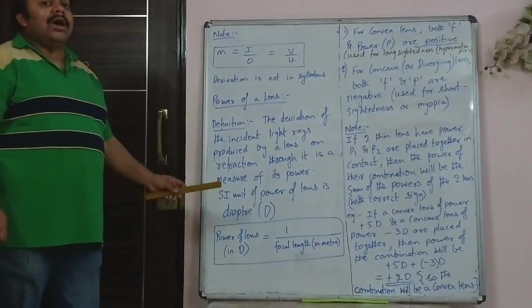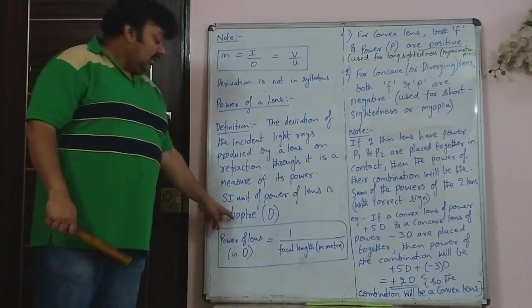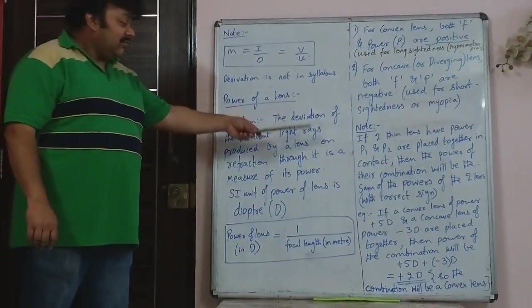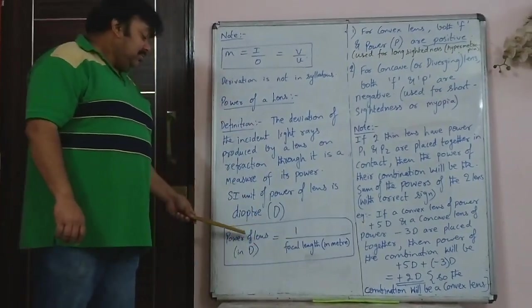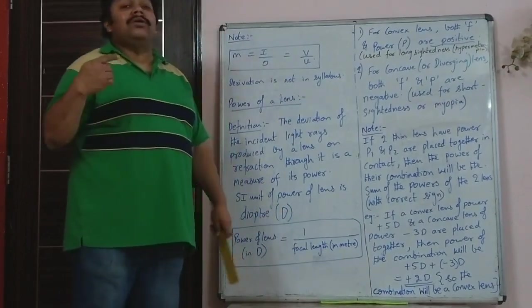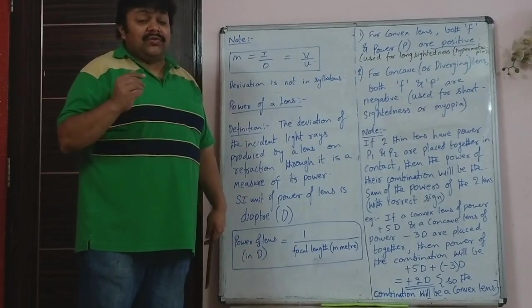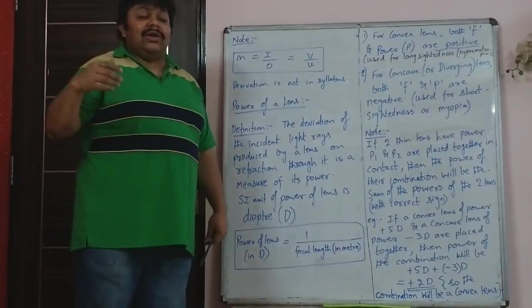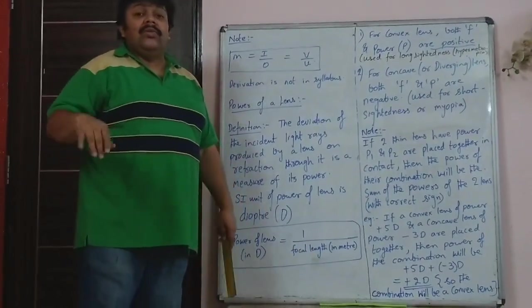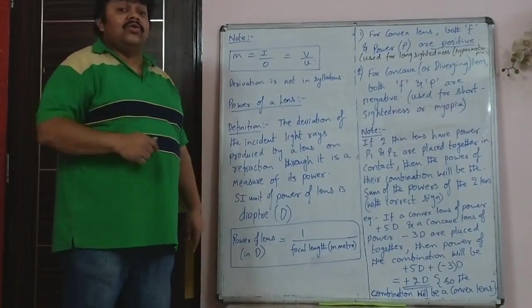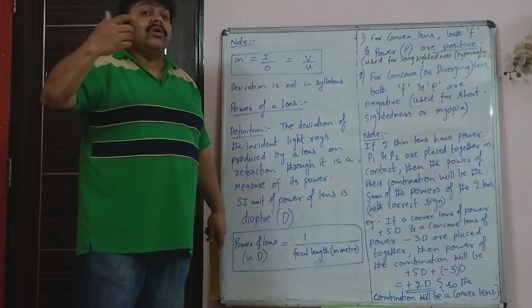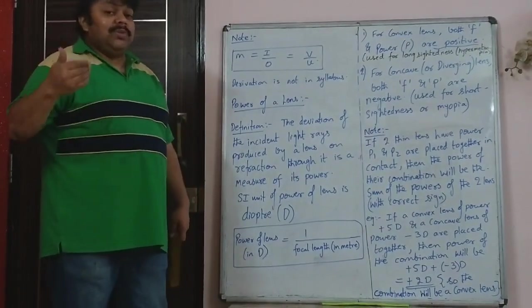The SI unit of power of lens is diopter, denoted by capital D. Power of a lens in diopter = 1 / focal length in meter. The focal length must be converted to meters. For example, a convex lens with focal length 20 cm: you write it as plus 0.2 m, so power = 1/0.2 = 5 diopter, and it will be plus 5 diopter for convex lens.